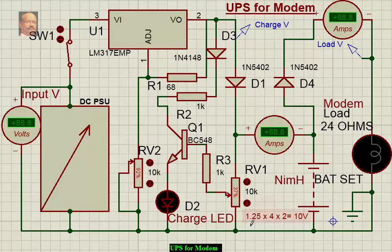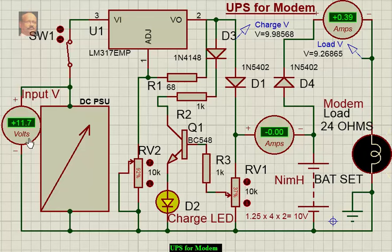The load, the modem, which is about 24 ohms, and the battery that we have used here - 1.25 volt NiMH batteries, 4 into 2, that means total about 10 volts we get here. So once we switch on this, what we notice is we get about 11.7 volts.